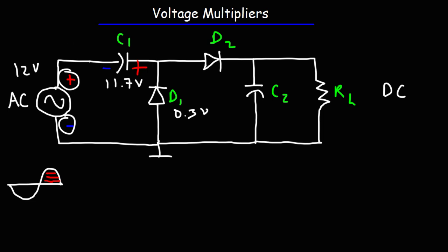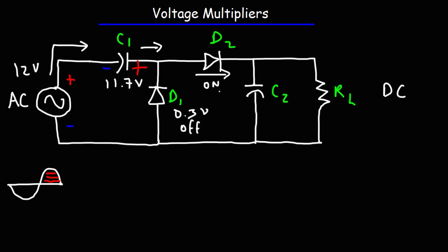Current is going to flow away from the positive terminal, and also from C1 away from its positive terminal. It won't be able to flow through D1 because D1 is in reverse bias mode. It will flow through D2 — so D2 is on — giving a voltage drop of 0.3 volts. So this point is at zero, this is at 23.7, and this will now be at 23.4 volts. Current then flows through C2, charging it. C2 charges during the positive half cycle to a potential of 23.4 volts.